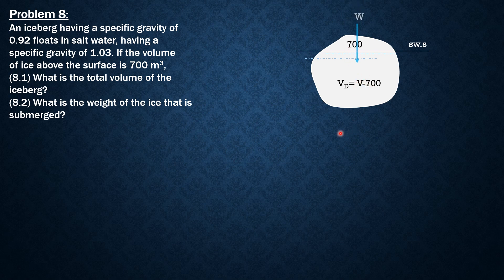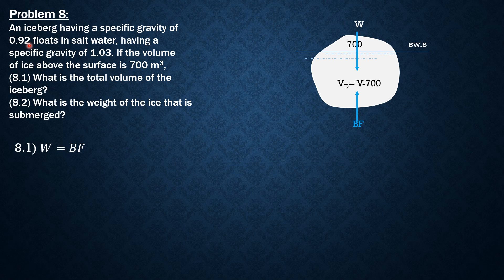Since weight equals buoyant force, let's use this equation to solve for the total volume of the ice. Weight equals buoyant force, where the weight is the specific gravity of the iceberg times gamma (specific weight of water) times the total volume of the ice,